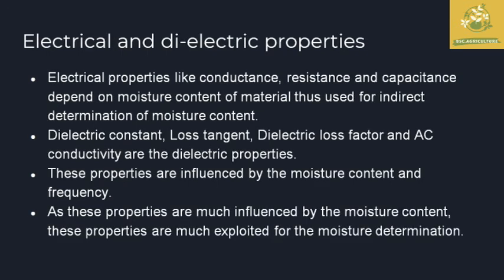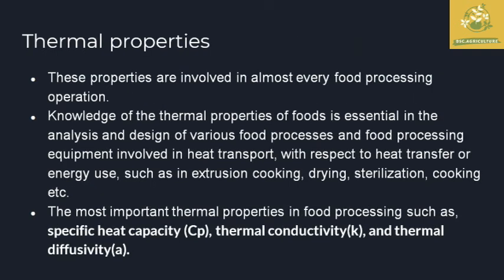Electrical and dielectric properties — including conductance, resistance, capacitance, and moisture conductance of food materials — are used to directly determine the moisture content of agricultural produce. Additional properties such as dielectric constant, loss tangent, and dielectric factors, as well as AC conductance, require careful attention. These properties are strongly influenced by moisture content and frequency, making them useful for moisture determination in agricultural commodities.